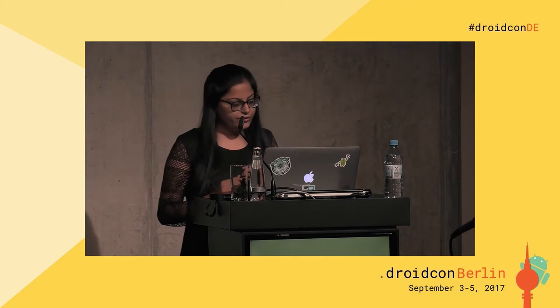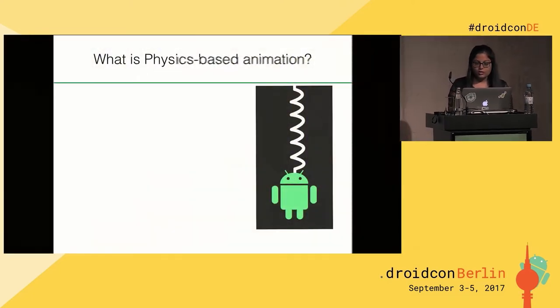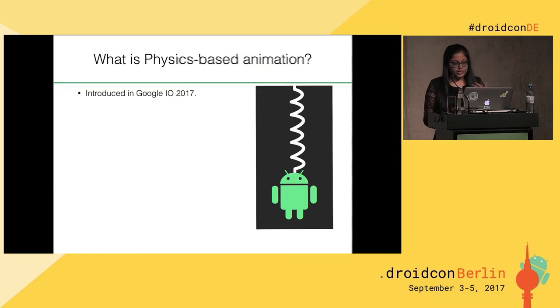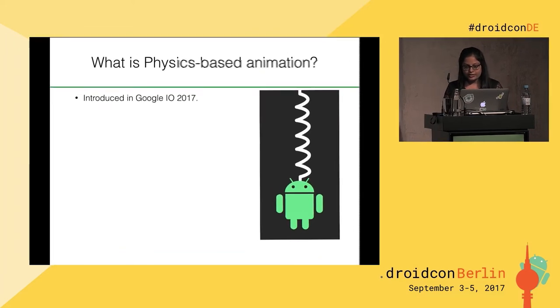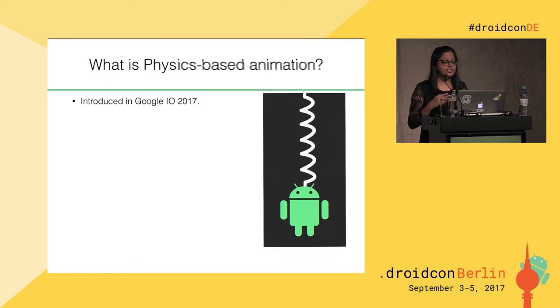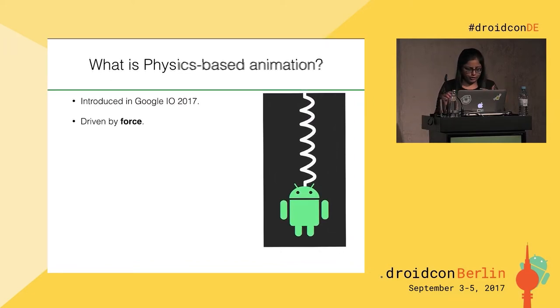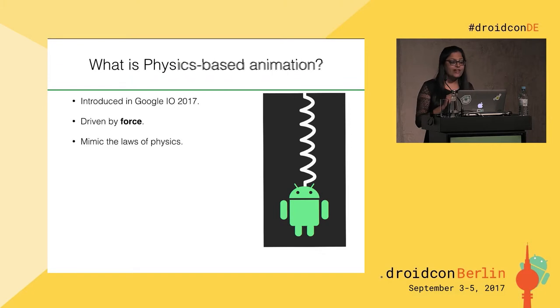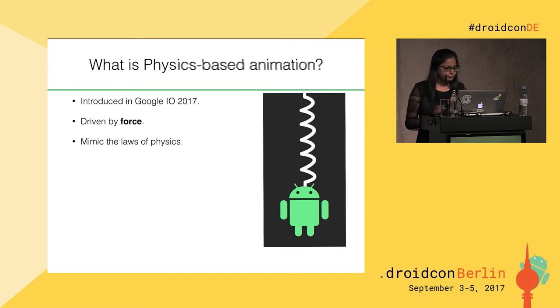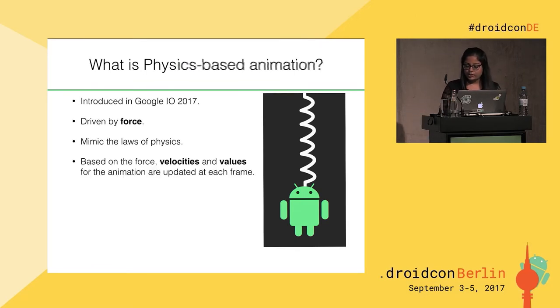Today I'm going to talk about the newly introduced physics-based animation library in Android, which you can use to build some really cool effects, like the ones I'm going to show you in my presentation. So what is physics-based animation? It was introduced at Google I/O 2017. Physics-based animation is an animation that is driven by force. Based on the force, acceleration or deceleration can be calculated, which can then be used to calculate and update the velocities and values for the animation at each frame. That's why it mimics the law of physics. The physics-based animation comes to rest when the force reaches equilibrium.